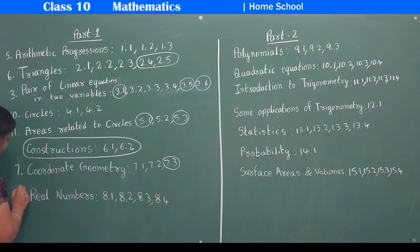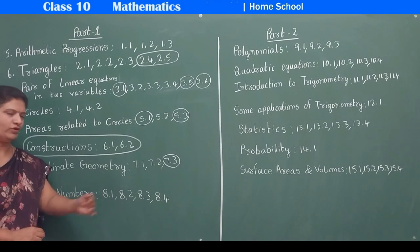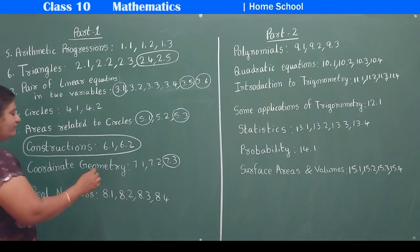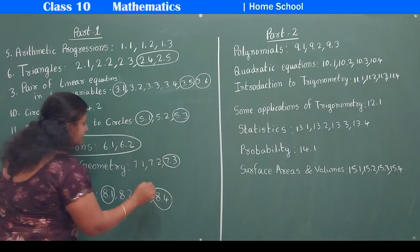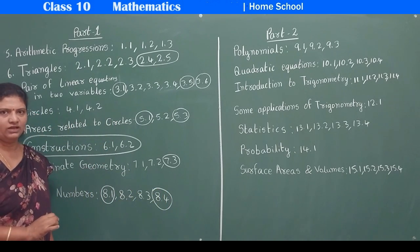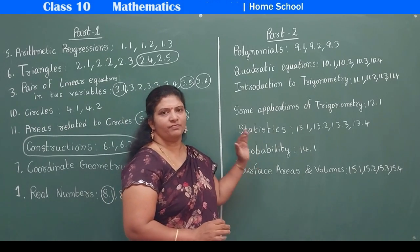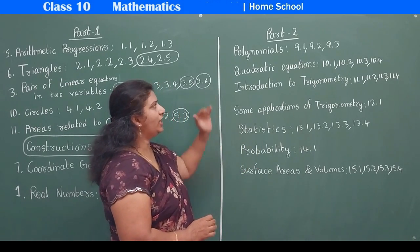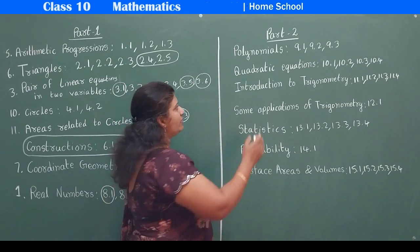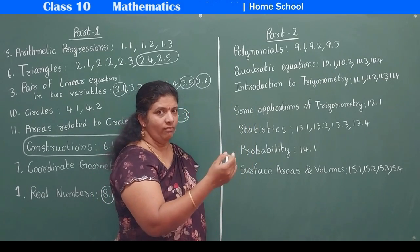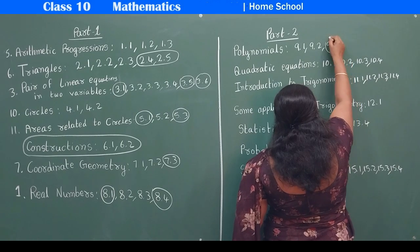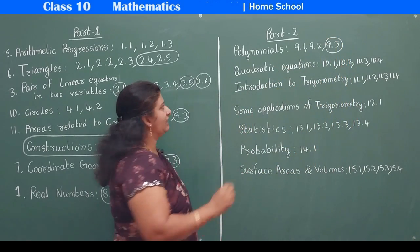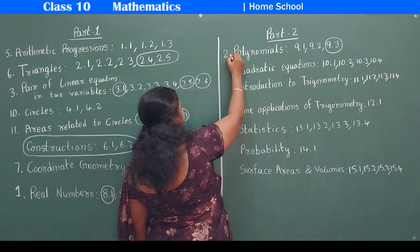Coming to Real Numbers, which is chapter 1 for this academic year. In this chapter we had four exercises, but for this academic year, the first exercise and the last exercise are deleted. Coming to Polynomials, we used to have three exercises before, but now we will be having only two exercises — the last exercise is deleted. This chapter number is given as 2.